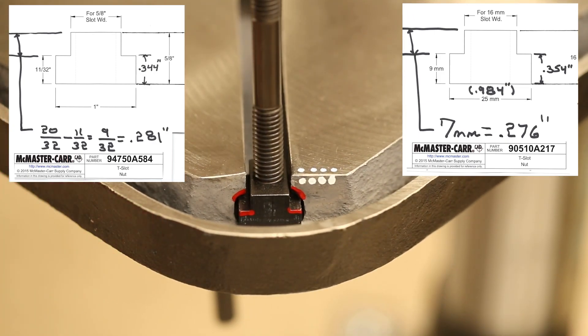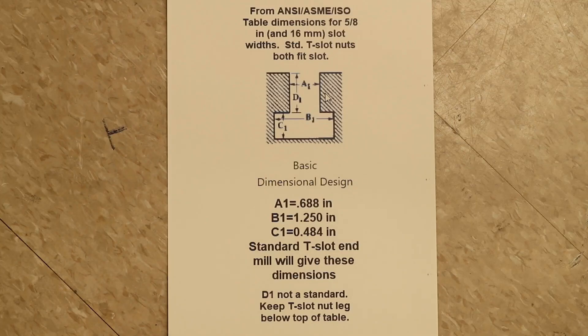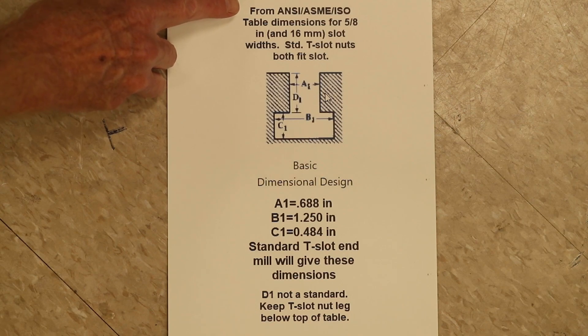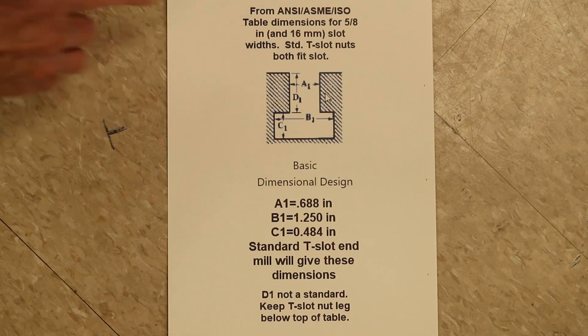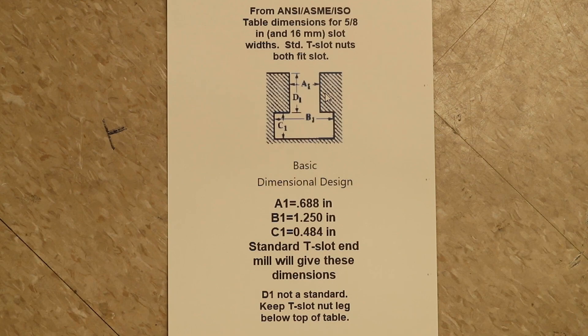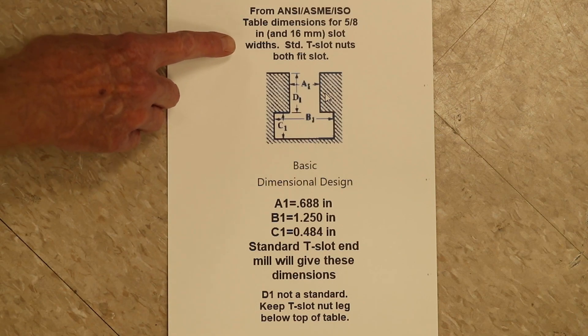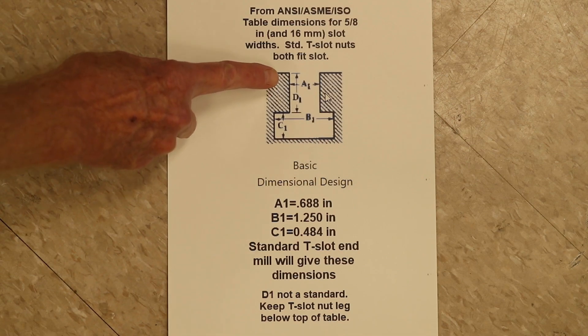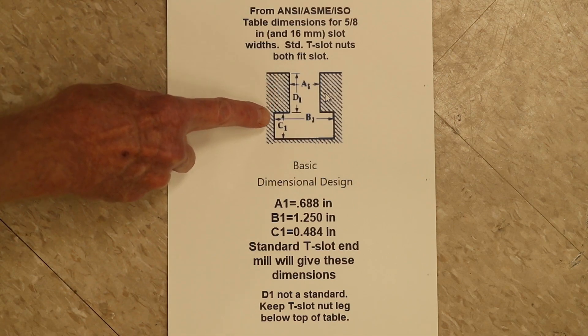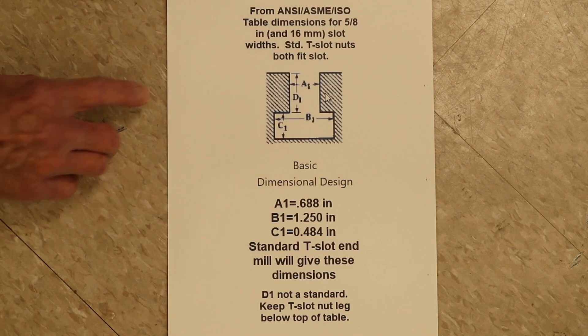To correct this problem we'll first note that from the ANSI ASME ISO standards for table dimensions that utilize a 5/8 inch and 16 millimeter slot and will accept standard T-slot nuts for those slot sizes, there are very specific dimensions and specific shapes for the slot in the table.